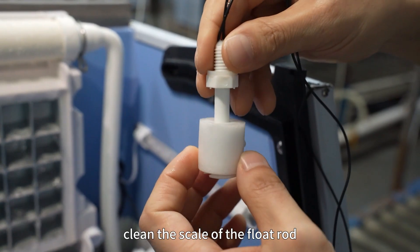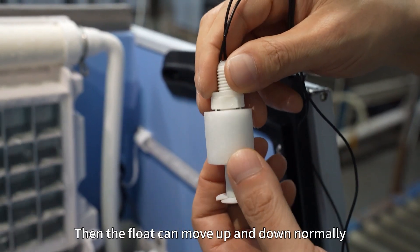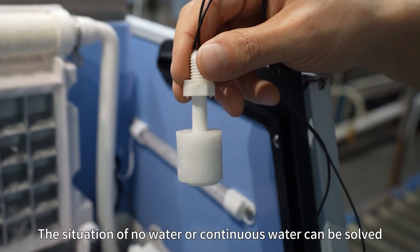Clean the scale of the float rod, then the float can move up and down normally. The situation of no water or continuous water can be solved.